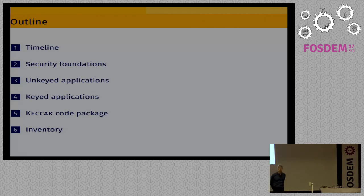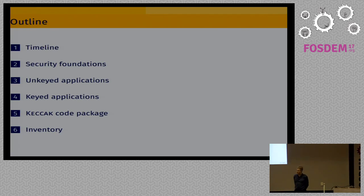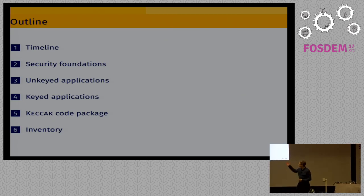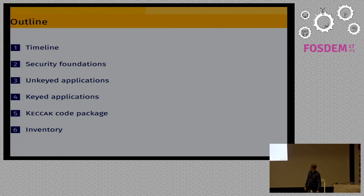This is the outline of my presentation. We'll start with some introduction, then discuss the security properties of symmetric cryptography. The core of the presentation will be divided into two parts: keyed applications and unkeyed applications, depending on whether or not we need a secret key. Then I'll talk briefly about the Keccak code package and recap on the functions with some inventory.